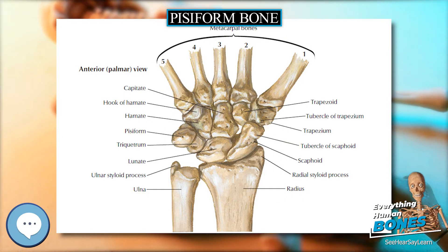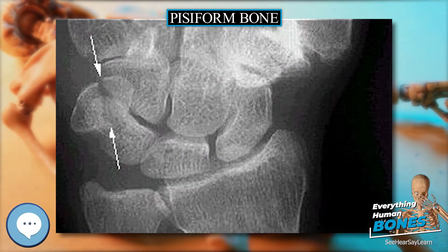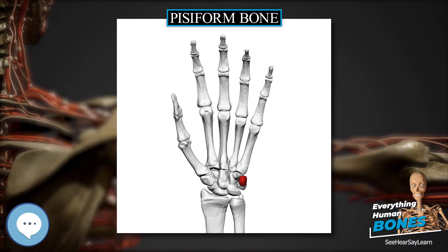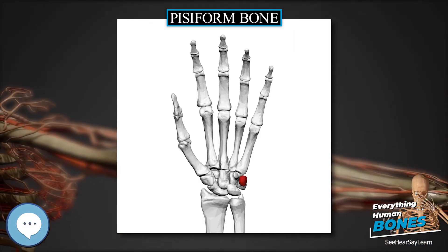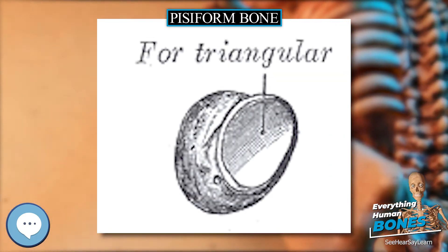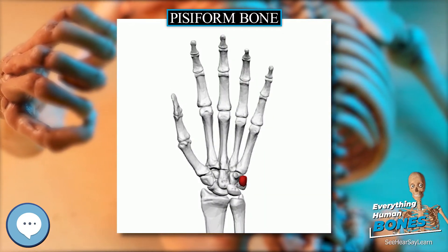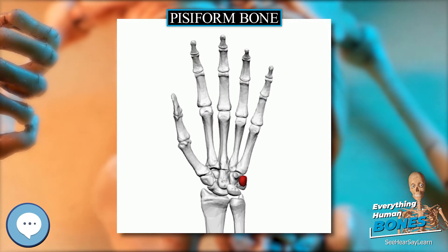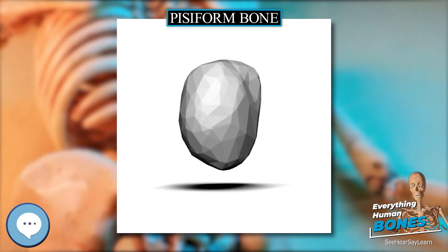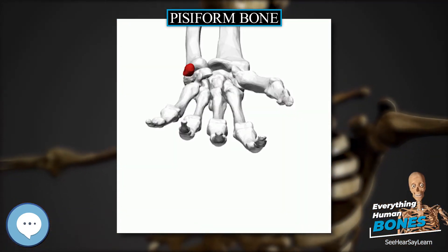It also acts as an attachment site for tendons of the abductor digiti minimi and for the flexor carpi ulnaris, the tendon in which it develops. The pisiform is the only carpal bone with insertions and attachments for the abductor digiti minimi and the flexor carpi ulnaris. It is suggested that due to the pisiform's surprisingly large range of movement along its articulation surface with the triquetral bone, about 1 cm of movement is allowed.